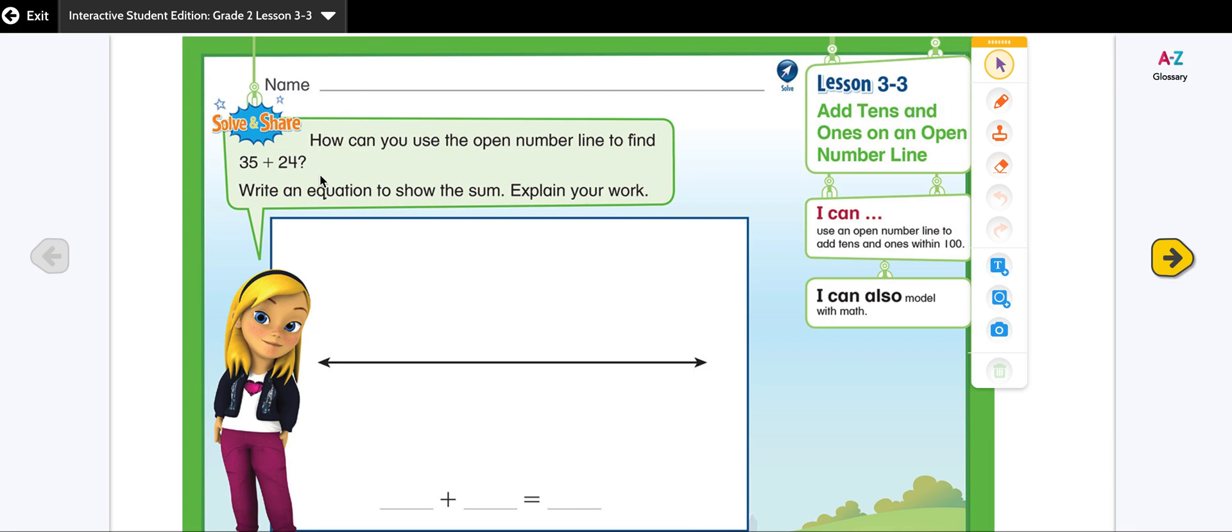So let's look at our problem here. How can you use the open number line to find 35 plus 24? Write an equation to show the sum.